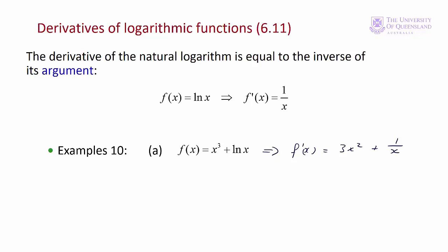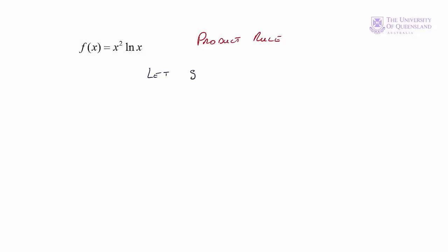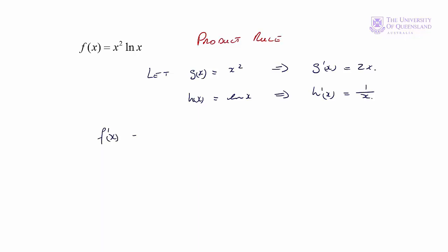However, we'll often encounter examples where the log functions are elements of products, quotients, or composite functions. We'll work through these two and then look at a composite function. Here f(x) = x²·ln(x). We'll use the product rule: let g(x) = x², so g'(x) = 2x; let h(x) = ln(x), so h'(x) = 1/x. Then f'(x) = g'(x)·h(x) + g(x)·h'(x) = 2x·ln(x) + x²·(1/x), which simplifies to 2x·ln(x) + x.